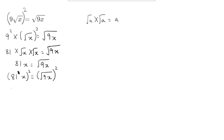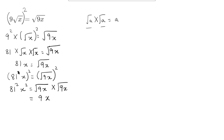Now 81x squared — the right hand side can be written as root of 9x times root of 9x. Again using the property root a times root a equals a, here a is 9x, so it can be written as 9x. Now we have: 81 squared x squared is equal to 9x.